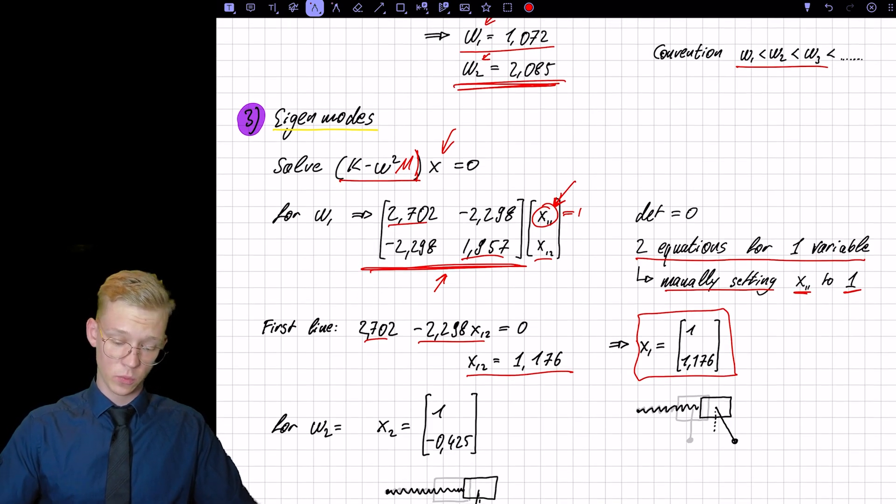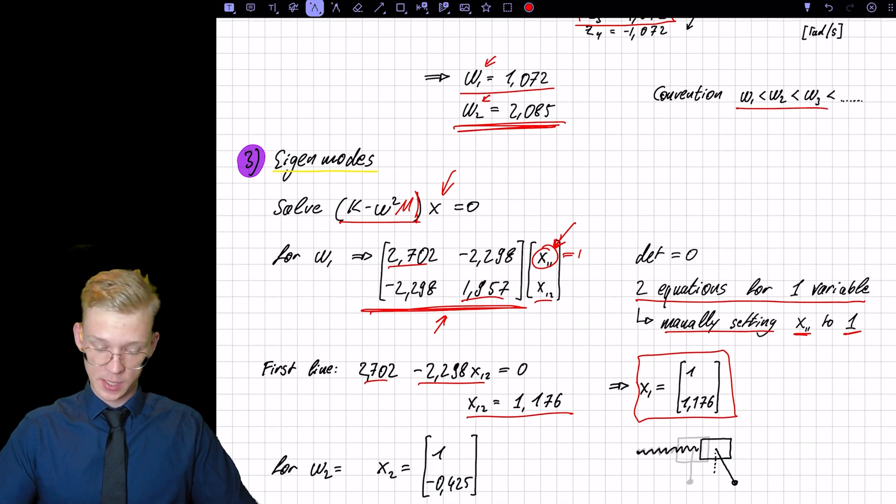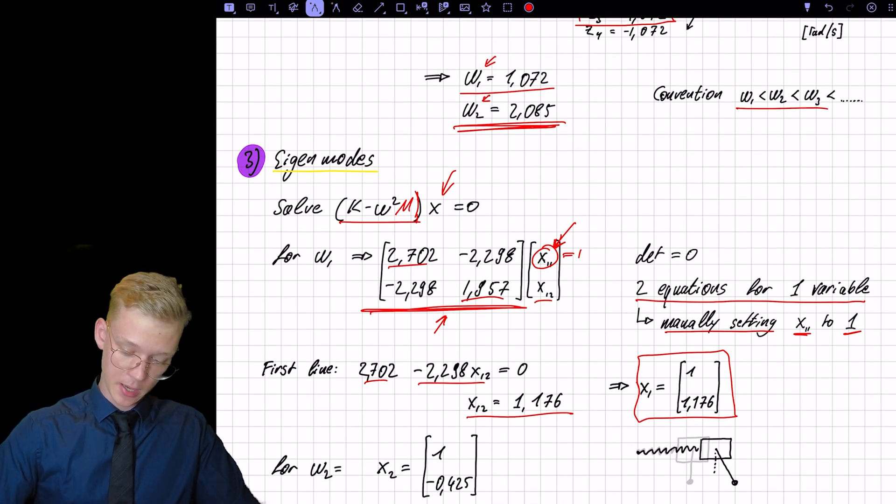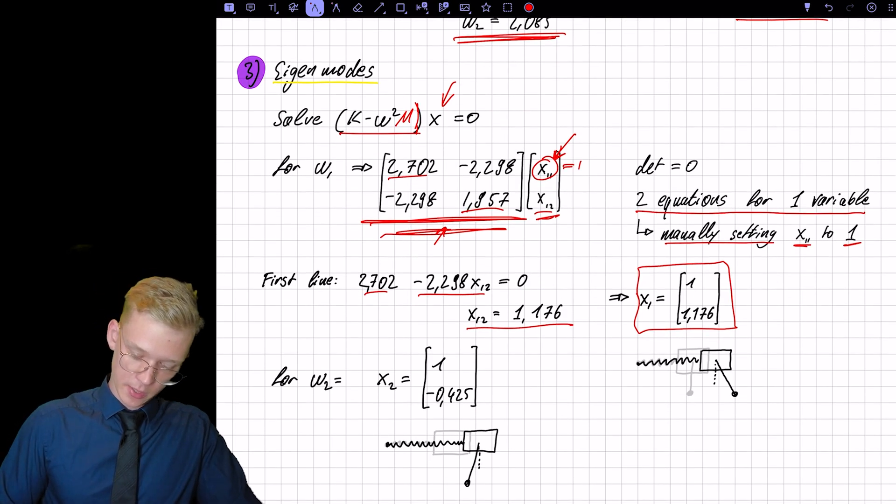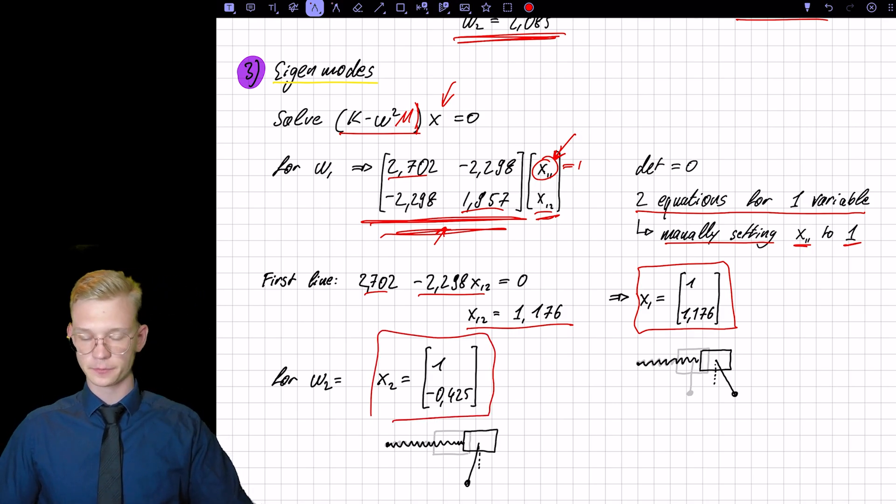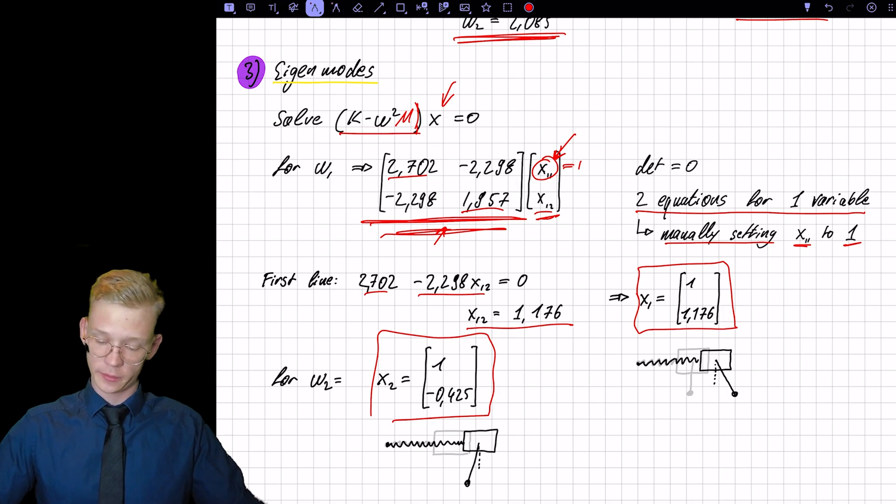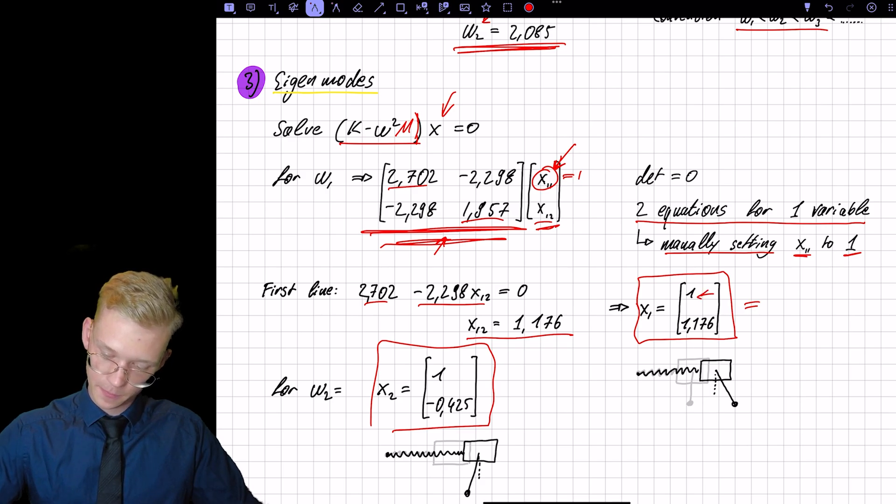We can do that the same with the second eigenfrequency. So we will get a new matrix here and a new value for x1.2. So we have this one as our second eigenmode. And we can also draw it because we have a very simple system. We know that the first part in the vector is our x, so our distance. And the second part is our angle.